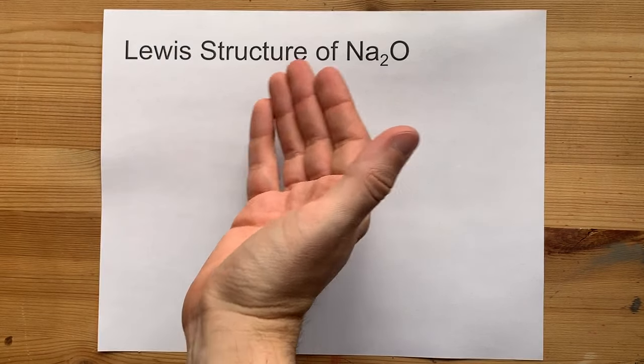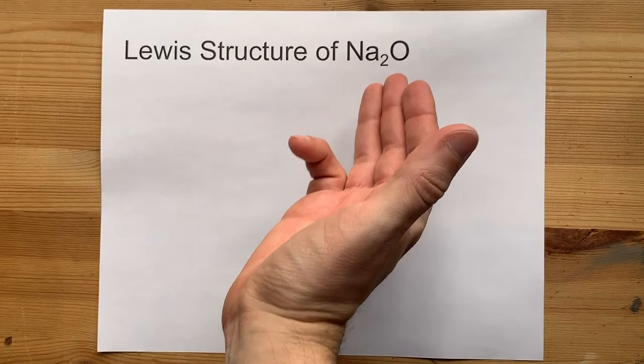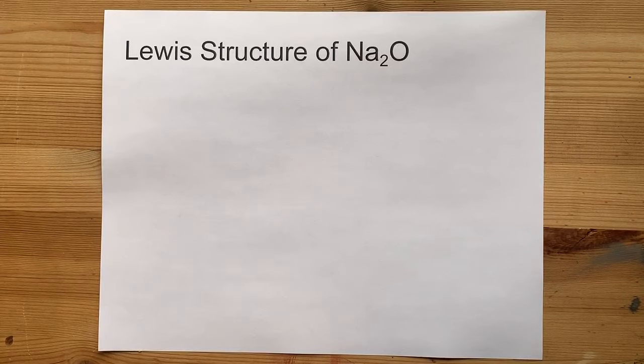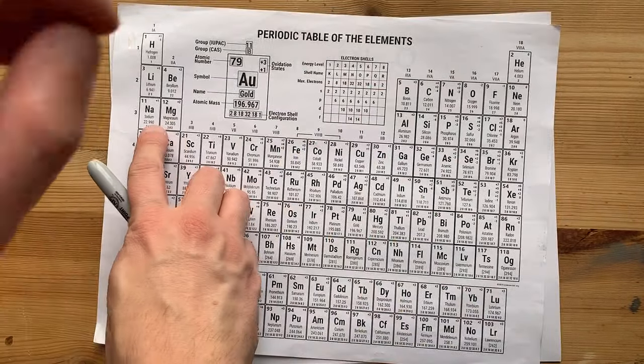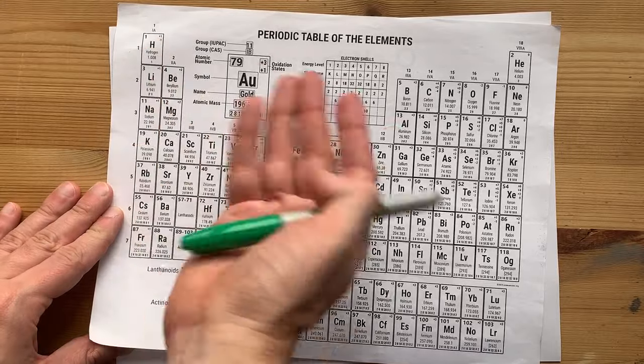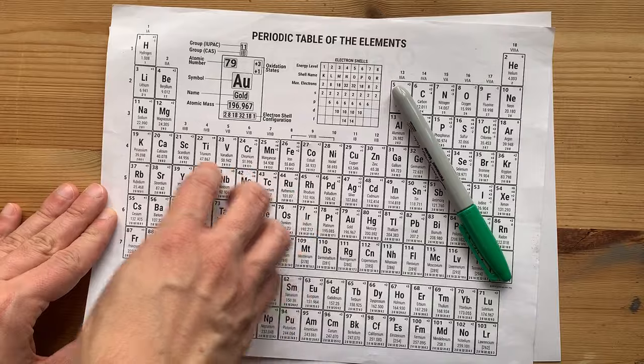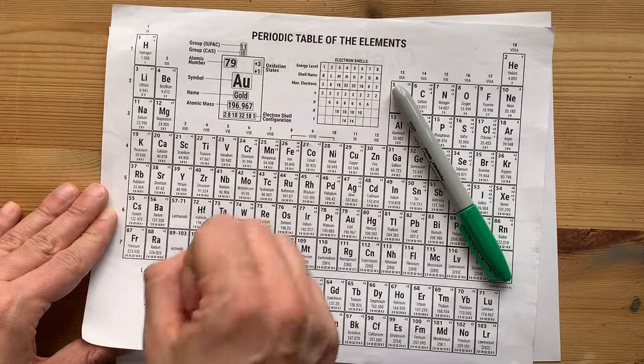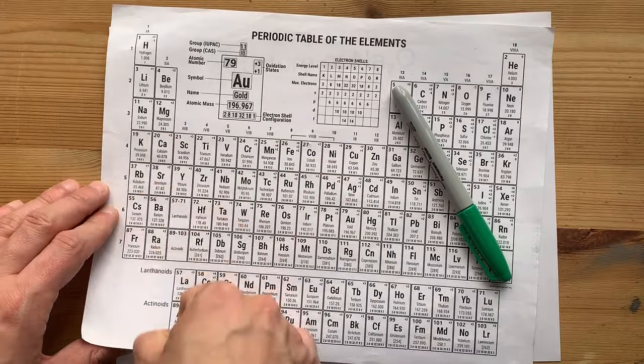Let's draw the Lewis structure of sodium oxide, Na2O. Now, Na is a metal. It's here in the alkali metal group. I know hydrogen's a non-metal, but you just have to remember that. Anything to the left of the staircase is generally a metal. Sodium definitely is.